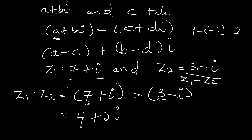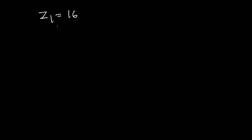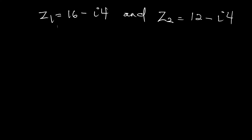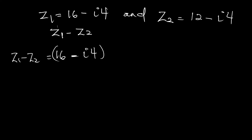Let's try one more example. We have z1 = 16-4i and z2 = 4-4i. We are asked to find z1-z2. So z1-z2 = (16-4i) - (4-4i).